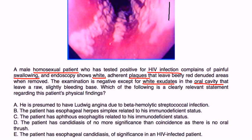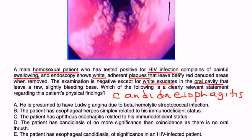Which of the following is a clearly relevant statement regarding the patient's physical findings? This patient has candida esophagitis, so you have to look for that in the answer choices. Some choices mention aphthous ulcers or herpes — those are wrong. What you're talking about is candida esophagitis in the presence of an HIV-infected patient, and that's the best answer choice.